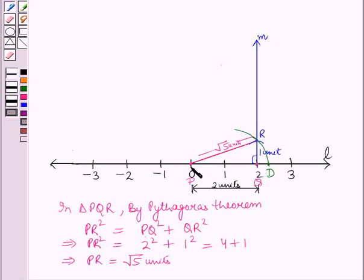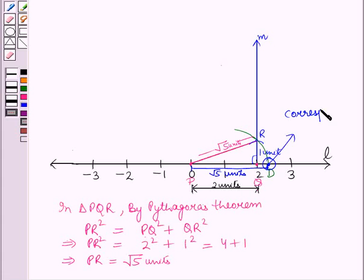Now pd is root 5 units, therefore the point d on the number line corresponds to the number root 5. So this is how we can draw root 5 on the number line.